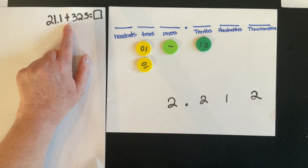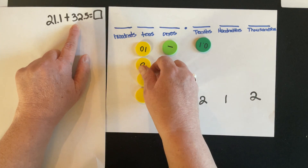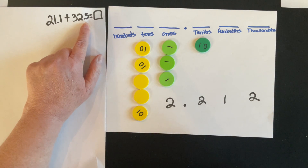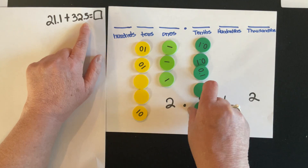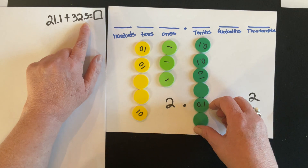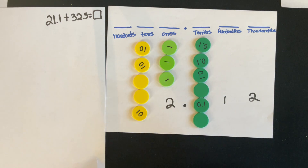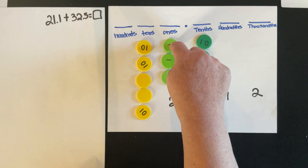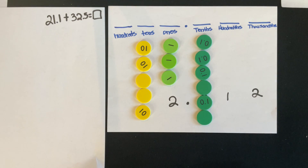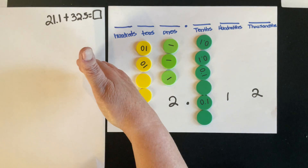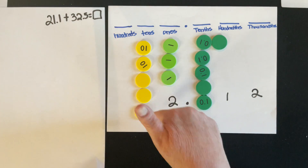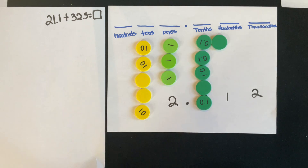Now I'm joining this with three tens, two more ones, and five more tenths. A key big idea on the place value mat is that moving to the left, a place value is ten times the amount to its right; moving to the right, it's one-tenth of that amount. So regrouping only happens if you accumulate ten discs in one column. I don't have ten of any disc in any column, so this is a simple addition problem with no regrouping.